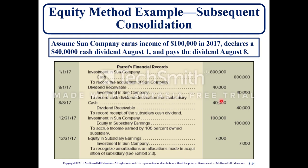In the equity method example for subsequent consolidation — the activity after the acquisition date: assume Sun Company earns income of $100,000 in 2017 and declares a $40,000 cash dividend on August 1st and pays the dividend on August 8th. The first entry adjusts the investment account for the $800,000 originally paid, zeroing out the investment. The $40,000 dividend receivable is recorded to record the cash dividend declaration from the subsidiary. Then the actual cash from the dividend on August 8th is recognized to record receipt of the subsidiary's cash dividend.